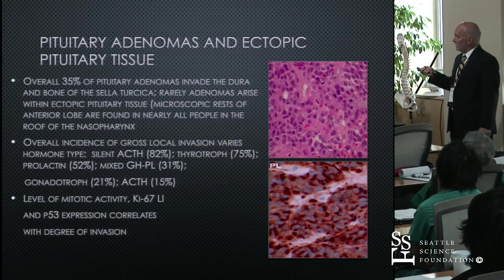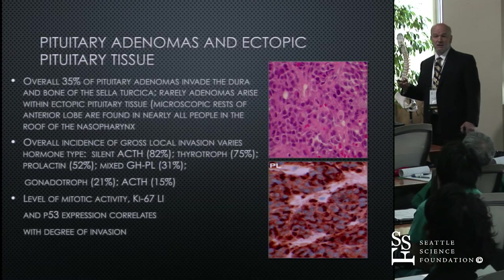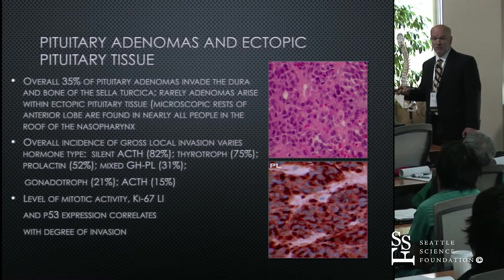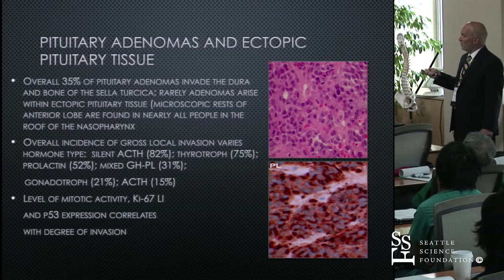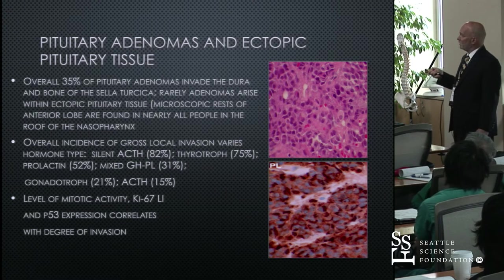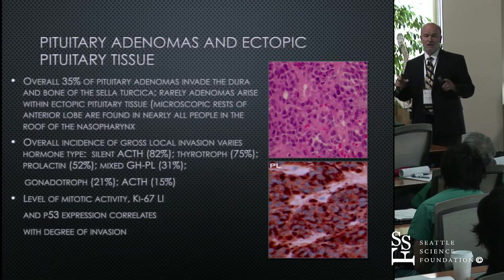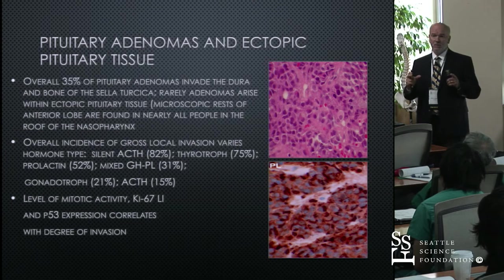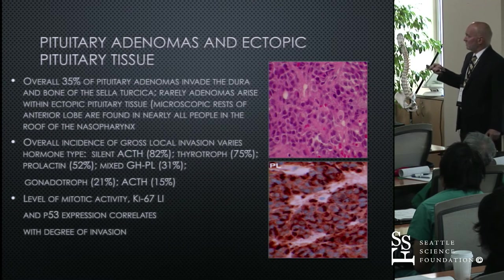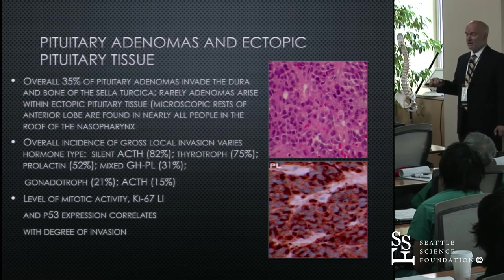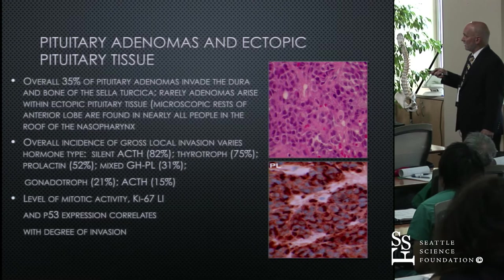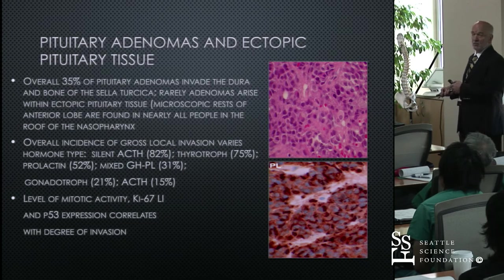Certain groups of adenomas are more aggressive — considered atypical or aggressive adenomas. These include the silent ACTH adenomas, thyrotrope adenomas, some prolactinomas, and the mixed sparsely granulated growth hormone-prolactinoma adenomas. When a pathologist notes atypical or invasive features, they may represent these special types. Pathologists can also assess the activity of these tumors by looking at proliferation indices — if elevated, they can be quite abnormal.